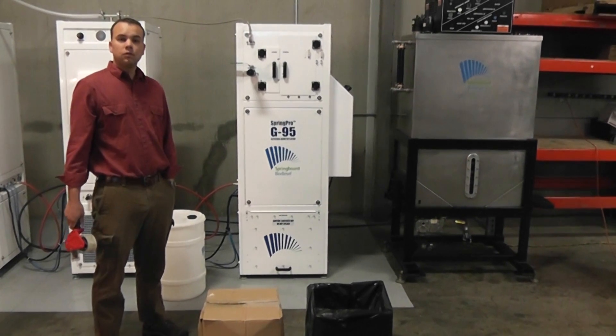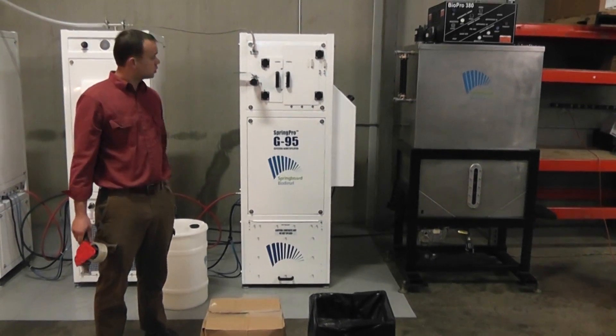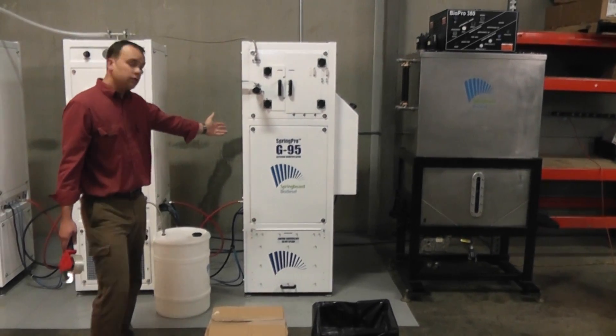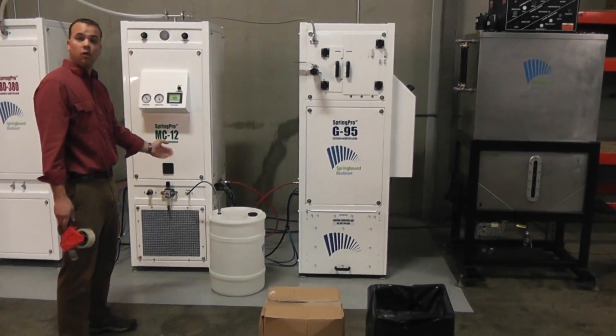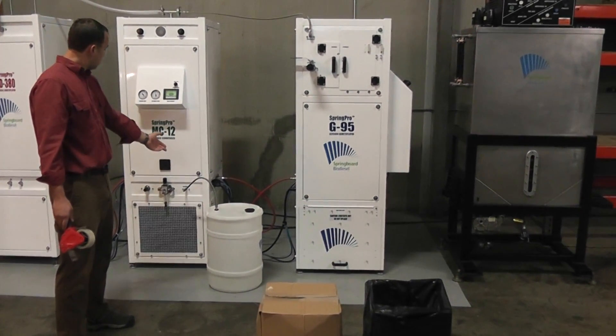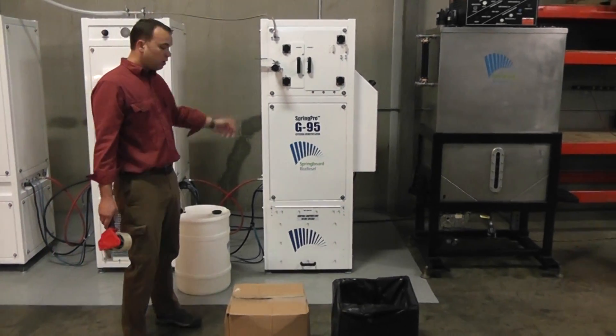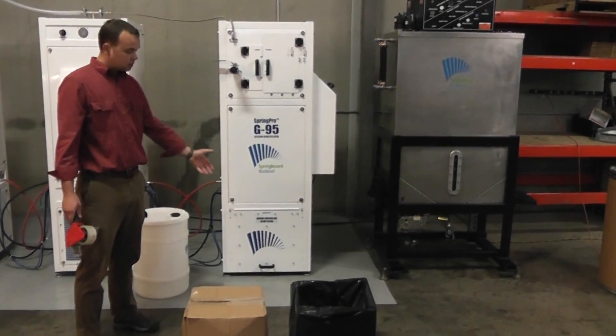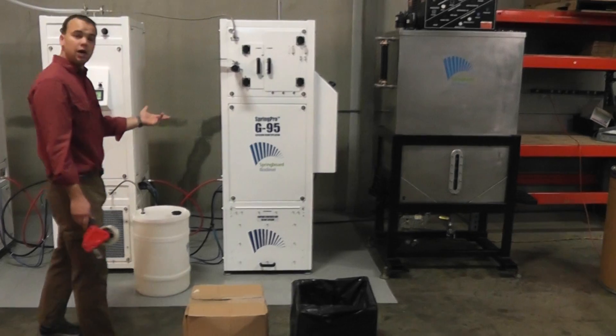Okay, so just to briefly recap, what we've done here is we've taken about a 21 gallon slug of glycerin out of our BioPro and processed it using our G95 glycerin demethylator, extracting about 5 gallons of methanol which has been condensed and output by our MC12 condensing unit. We've saponified all the oils in that glycerin, casting the soaps into these boxes. That process took about 6 hours in this case.